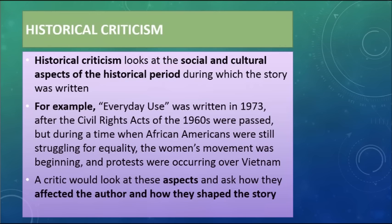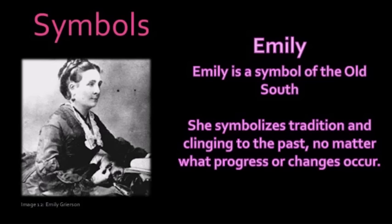Another type of criticism is historical criticism. Historical criticism looks at the social and cultural aspects of the historical period during which the story was written. For example, the Yellow Wallpaper was written at a time when women could not vote and could not own property — so how did those aspects affect the author and the story? For another example, we have A Rose for Emily. Emily is supposed to be a symbol of the Old South, a little bit after the Civil War when the South was kind of decaying. Author William Faulkner writes a lot about that decay and the grotesqueness of trying to cling to the past.